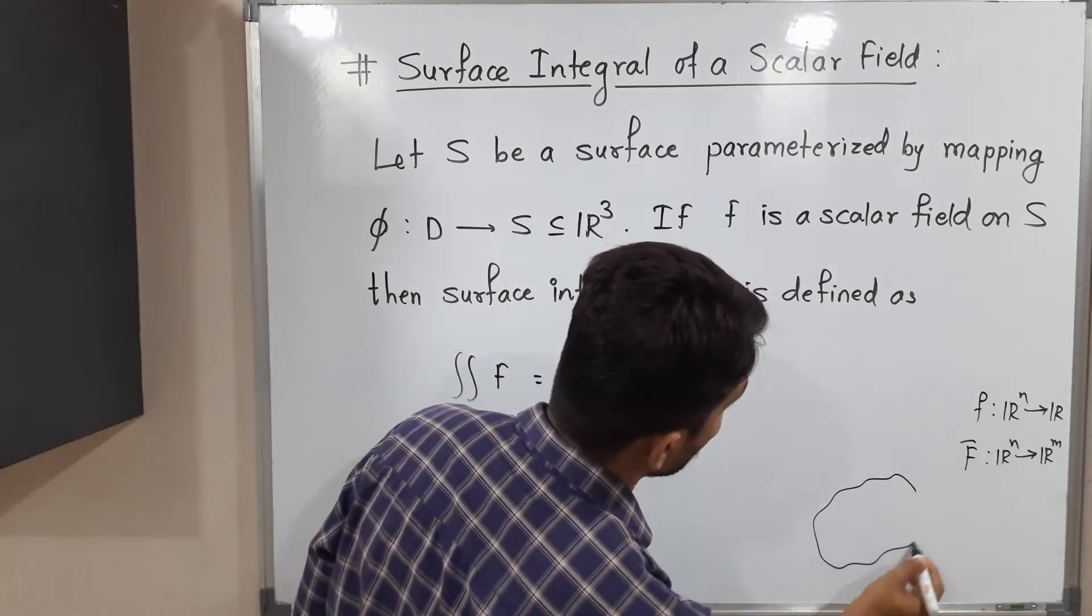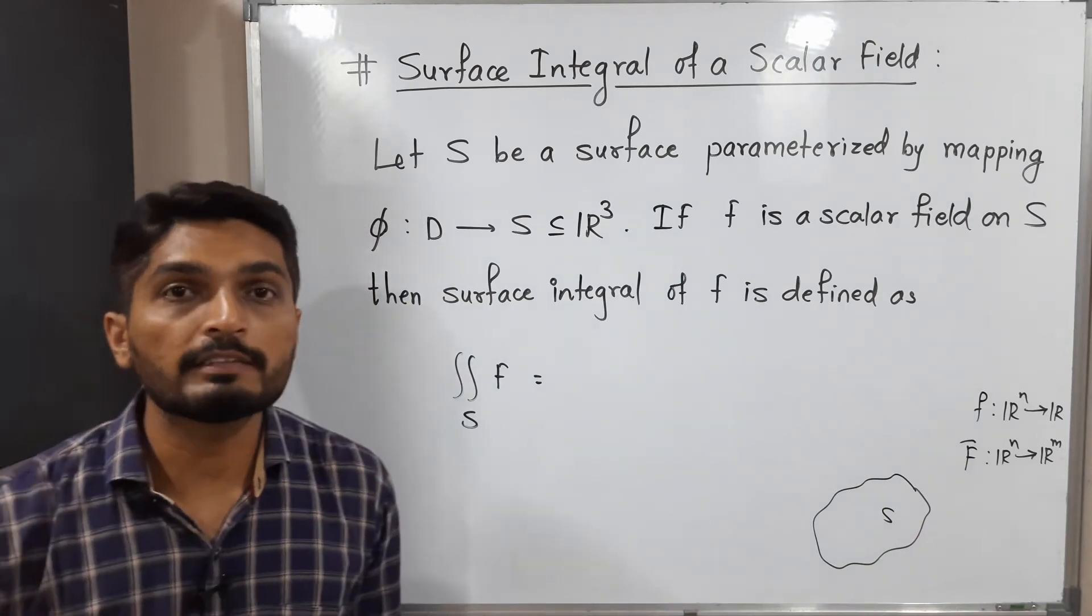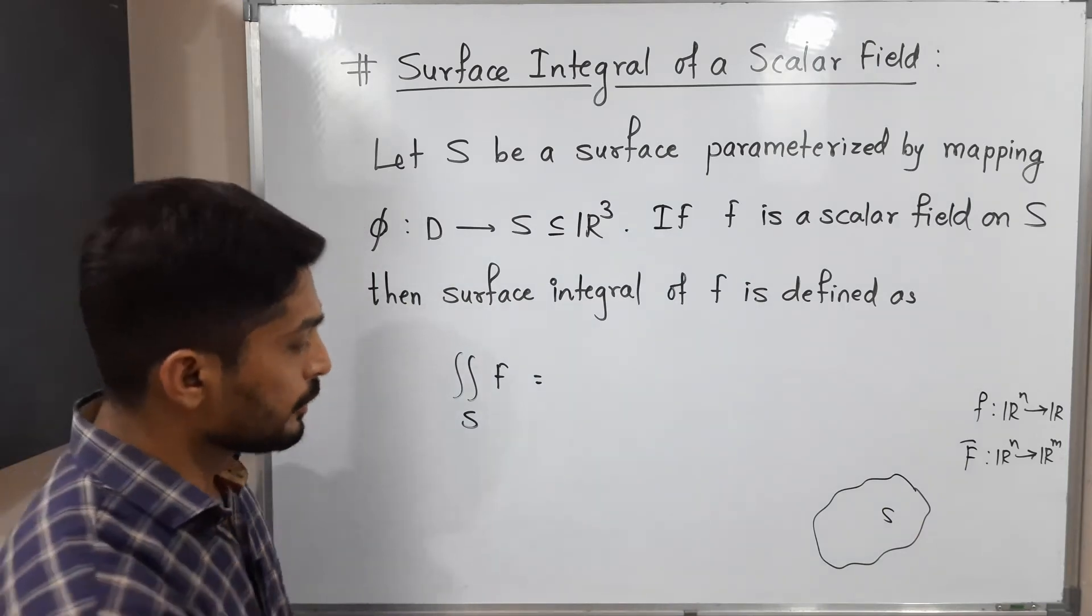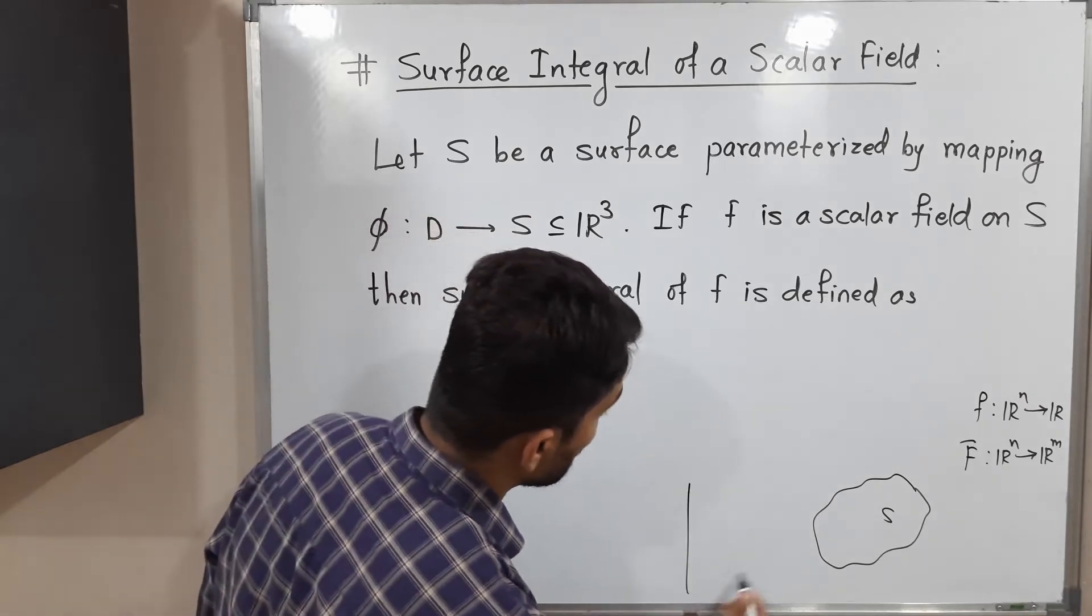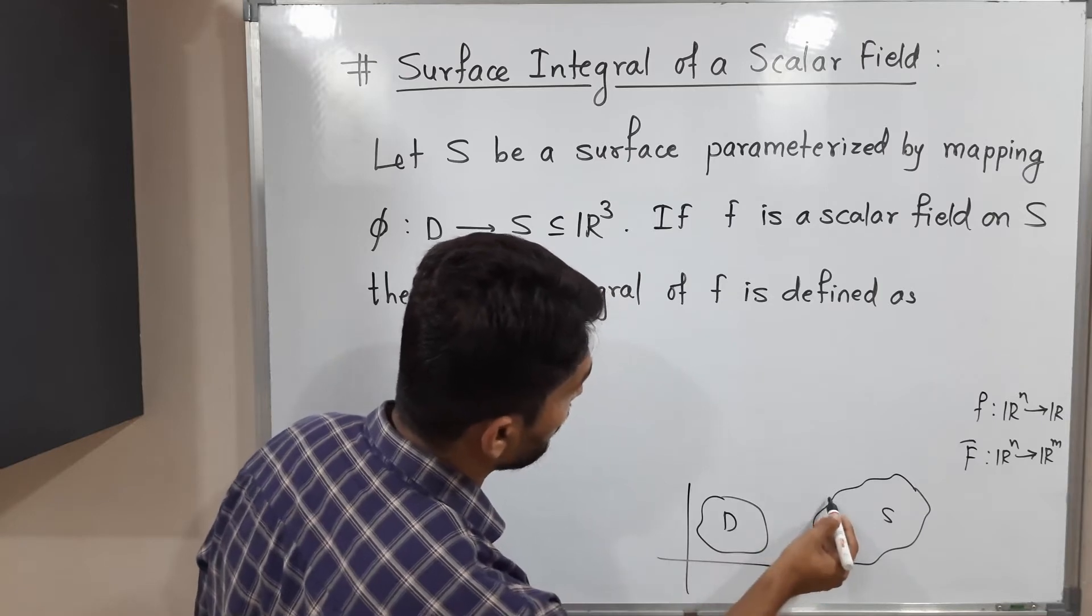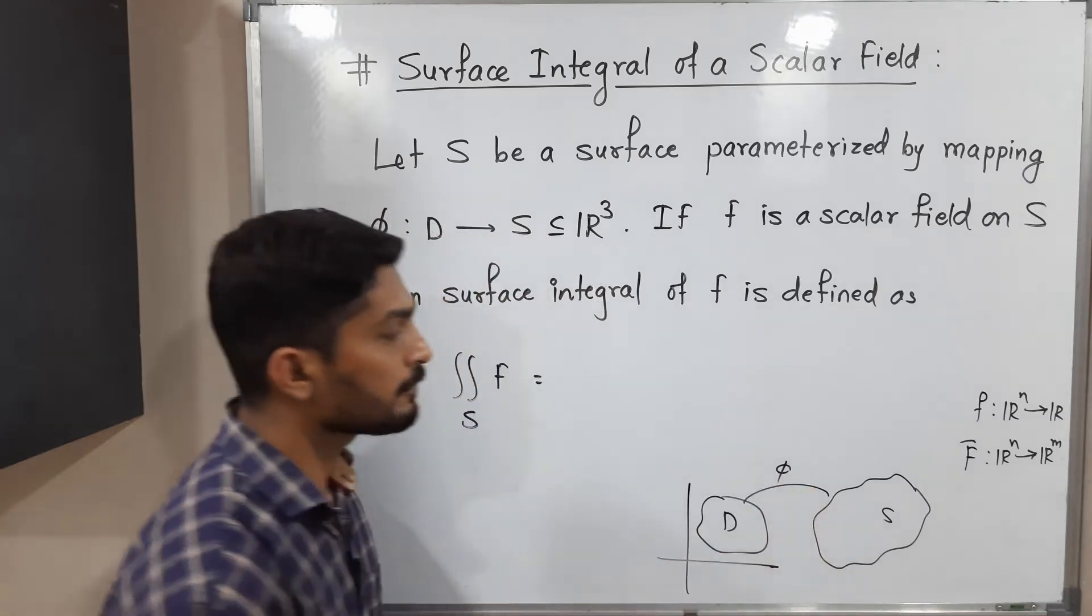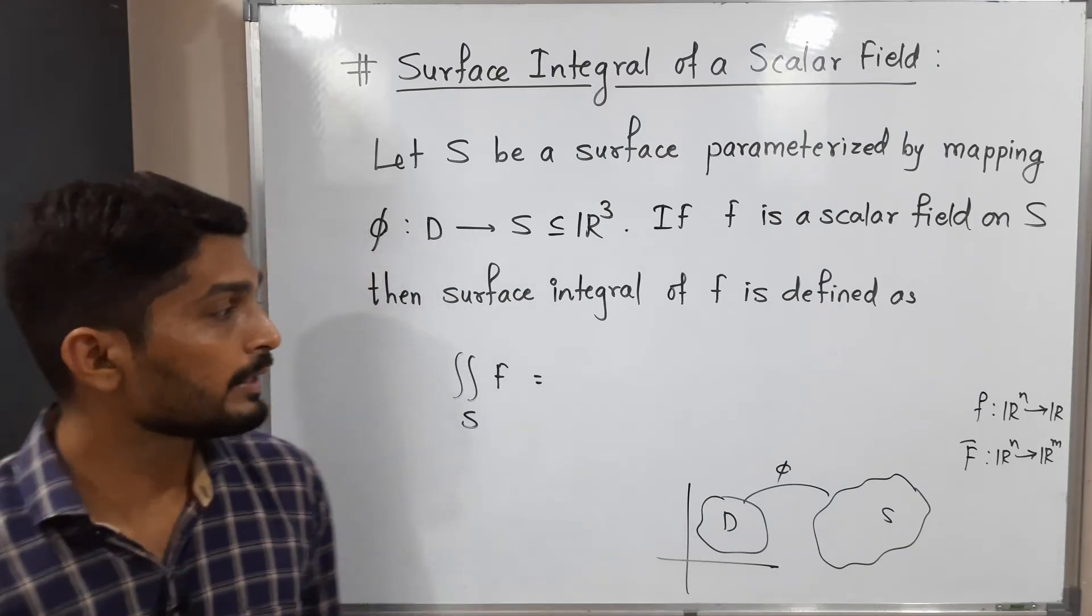So suppose this is set S which is a surface, we need to have its parameterization. Let me show it here. Suppose D is a subset of R² and φ is a function from D to S. So φ is a parameterization of that surface S. Then with